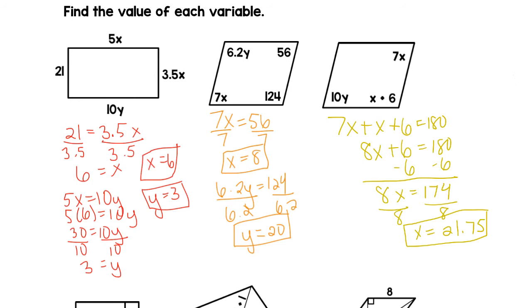We can use a calculator for that one. Now we've got to find Y. So we can say 10Y equals 7X because they're opposite angles, and they're congruent. So 10Y equals 7 times 21.75, or 10Y equals 152.25. Divide by 10, and we get Y is 15.225.